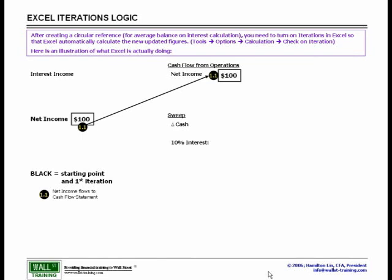This $100 of net income will flow to the cash flow statement under cash flow from operating activities. Assuming there's nothing else going on in the company, this $100 of net income directly results in an increase in cash of the same $100. With a 10% interest income rate, we now have $10 of interest income to calculate.